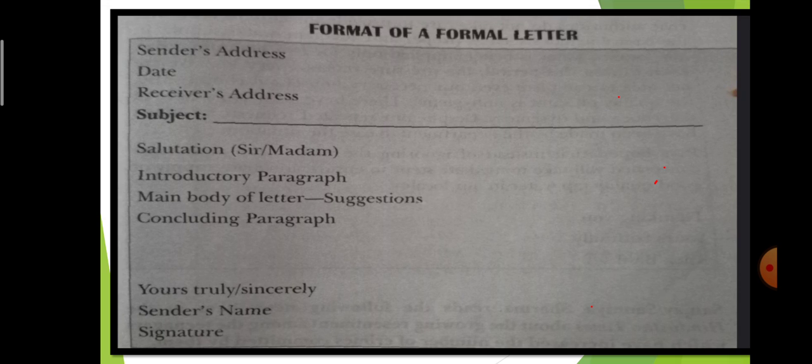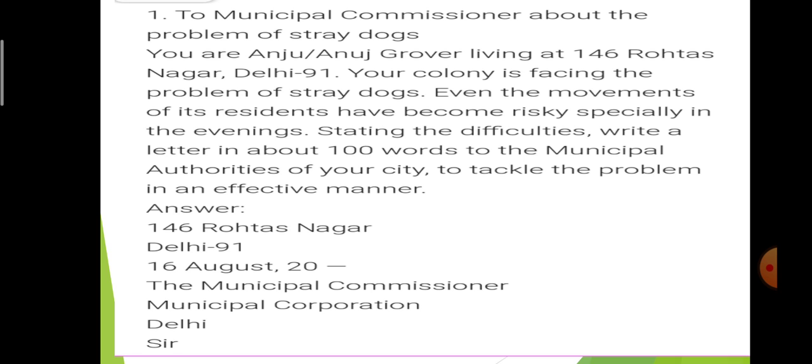I hope you have understood. Now I am giving you an example question: write a letter to the Municipal Commissioner about the problem of stray dogs. You are Anuj or Anju Grover, living at 146 Rotas Nagar, Delhi. Your colony is facing the problem of stray dogs. Even the movements of residents have become risky, especially in the evenings. Stating the difficulties, write a letter in about 100 words to the municipal authorities to tackle the problem in an effective manner.